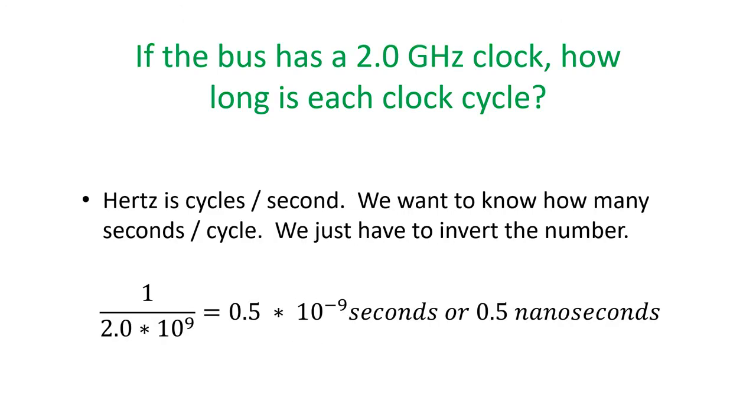We want to know how long is each clock cycle - how many seconds per cycle. Hertz is cycles per second, so we invert that to get seconds per cycle. With 2 gigahertz, that's 2 times 10 to the ninth cycles per second. Inverting gives us 0.5 times 10 to the negative ninth seconds, which is half a nanosecond.